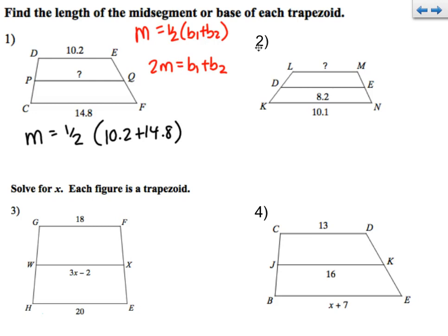We're going to type that in the calculator. 10.2 plus 14.8 is 25. Half of 25 is going to be 12.5. So my midsegment will be 12.5.